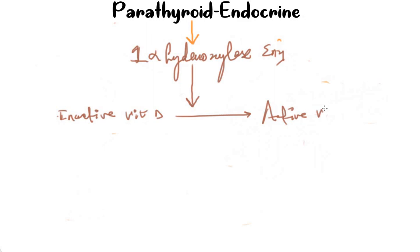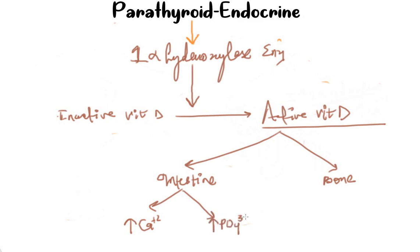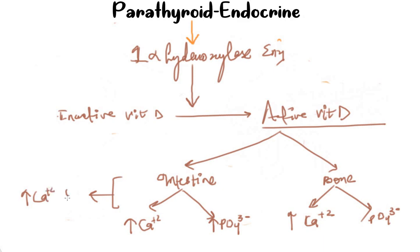This active vitamin D has two targets: first the intestine, and second the bone. From the intestine it will increase the absorption of calcium and phosphate. From the bone it will increase the resorption of calcium and phosphate.